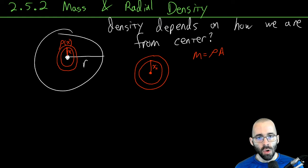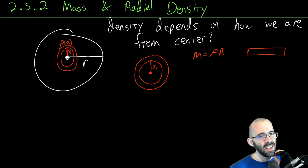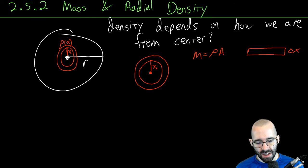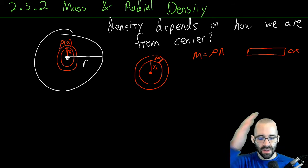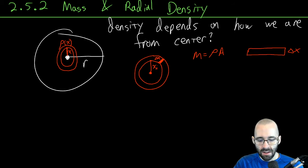The inner circle has radius x_i, the outer circle has radius x_i plus delta x. If we unroll this it becomes kind of like a rectangle - not quite a rectangle, but kind of like a rectangle where this is delta x.